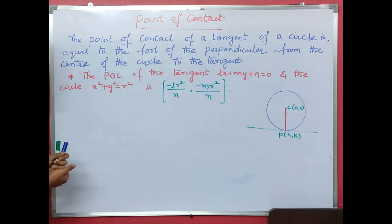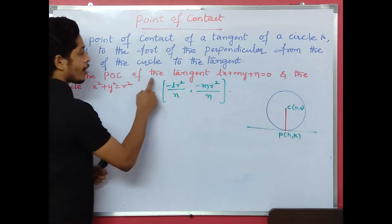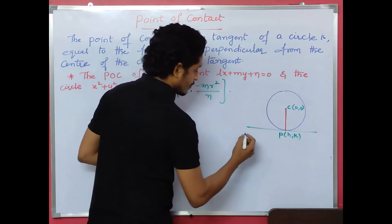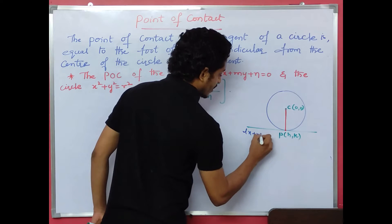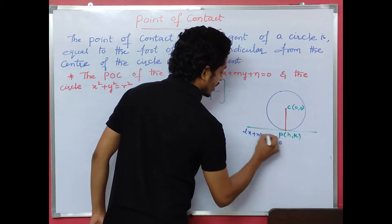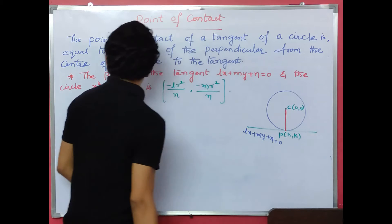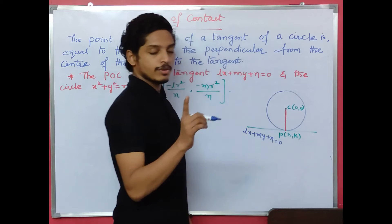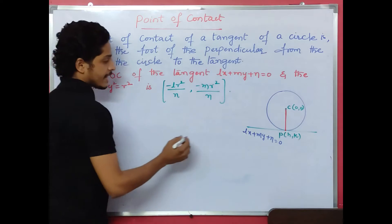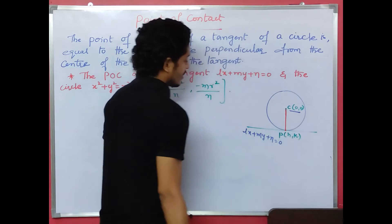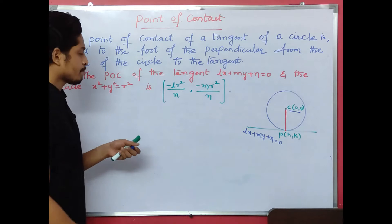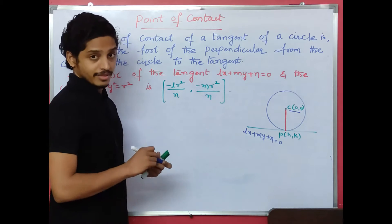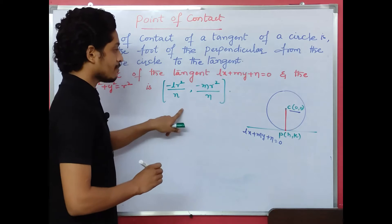Suppose for example, the point of contact of the tangent lx plus my plus n equals to 0, and x squared plus y squared equals to r squared is the circle. The point of contact is minus lr squared by n, comma minus mr squared by n. This is the formula.